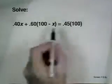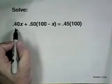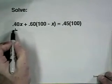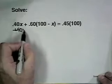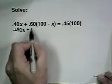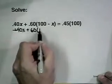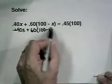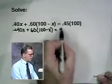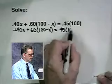Here's the solution to the problem. Our first step was to remove the decimals by multiplying through by 100. That would make this 40x + 60(100 - x) = 45(100).